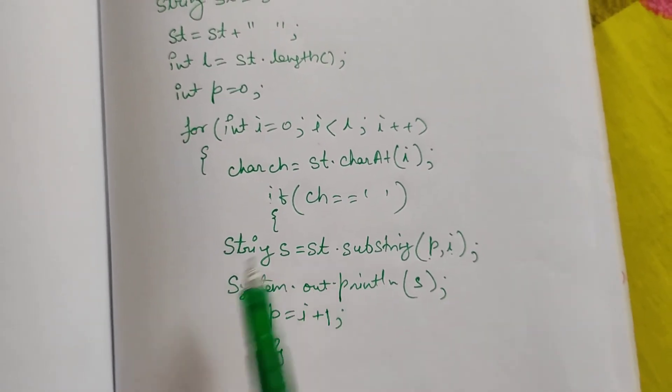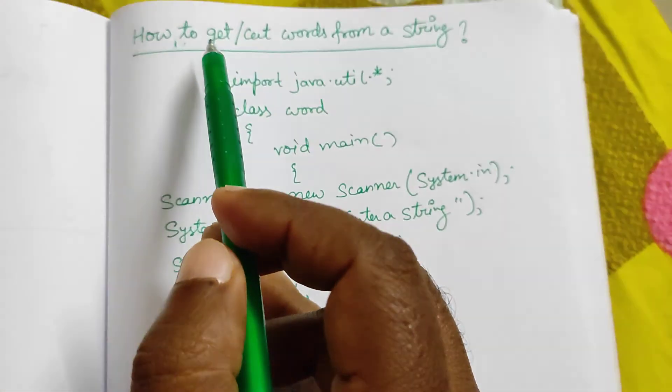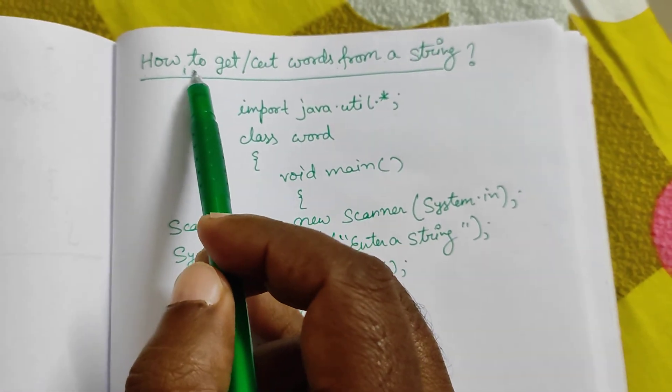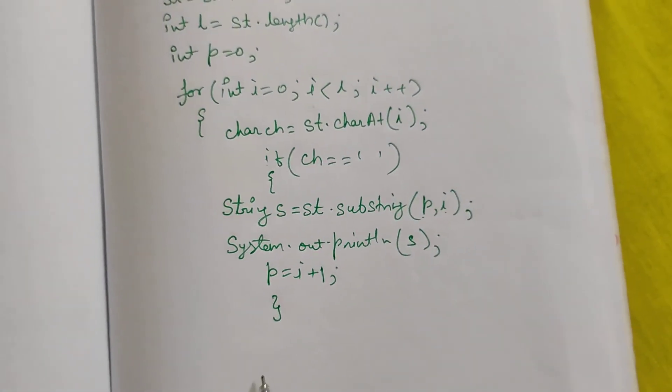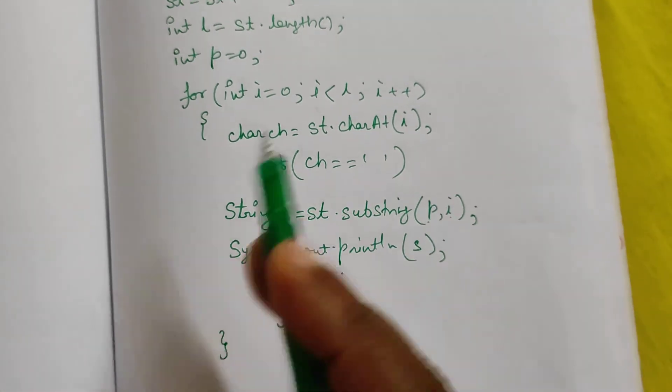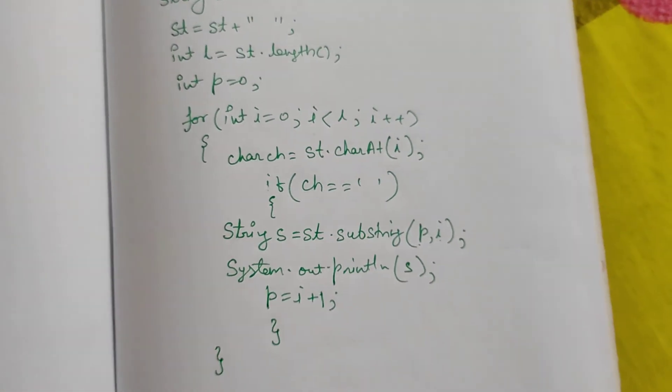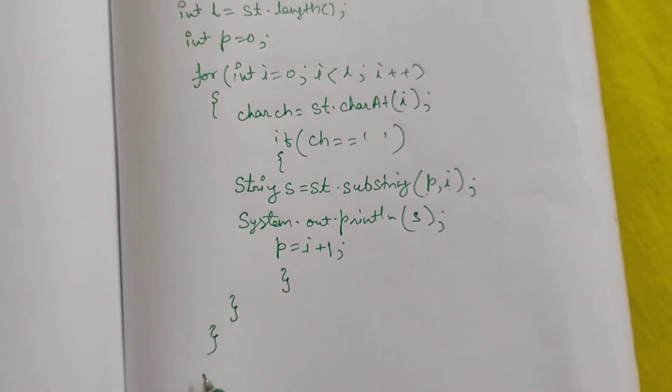Now our next word will cut from this p position. Then what we will do, we will close the for loop because this loop will execute till our string is present, and then close the loop.